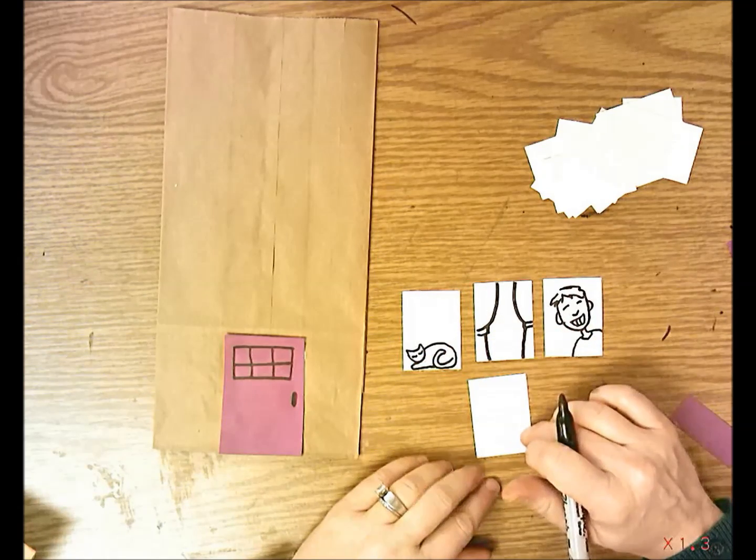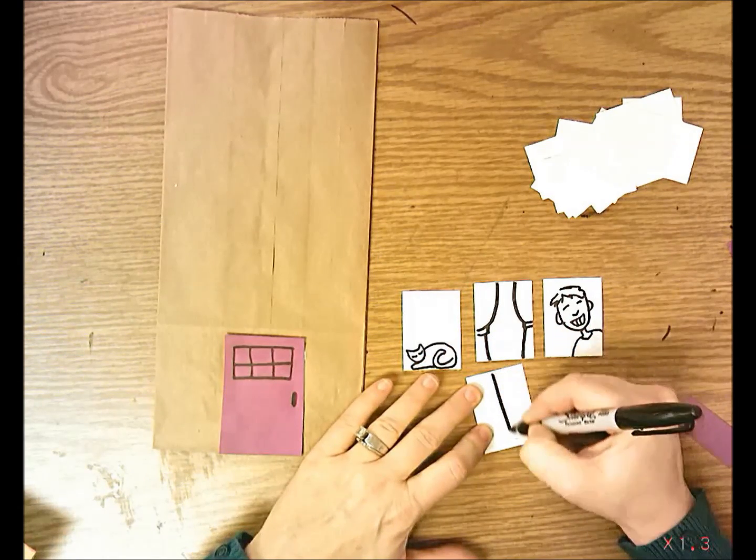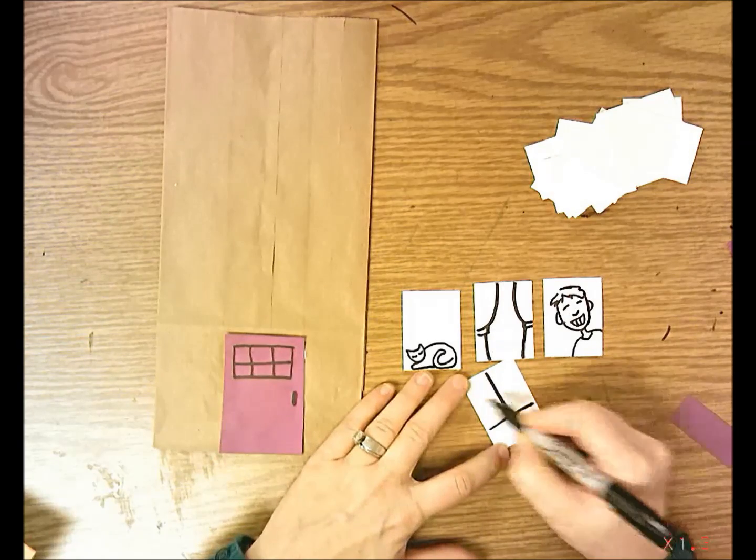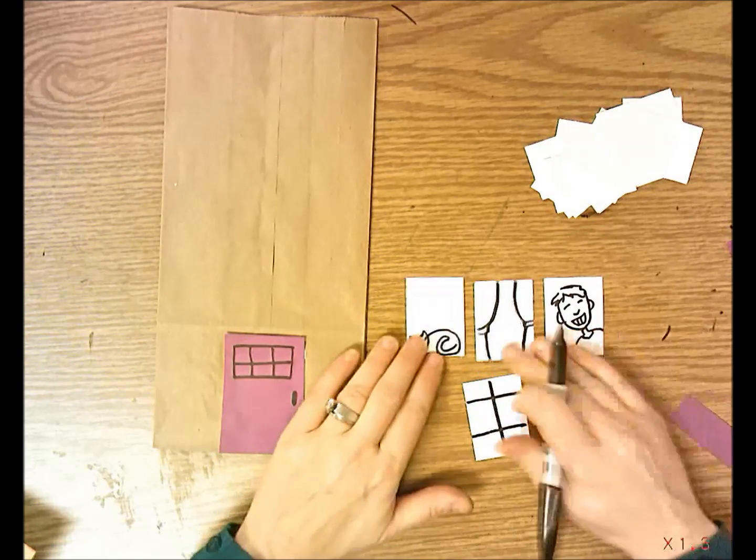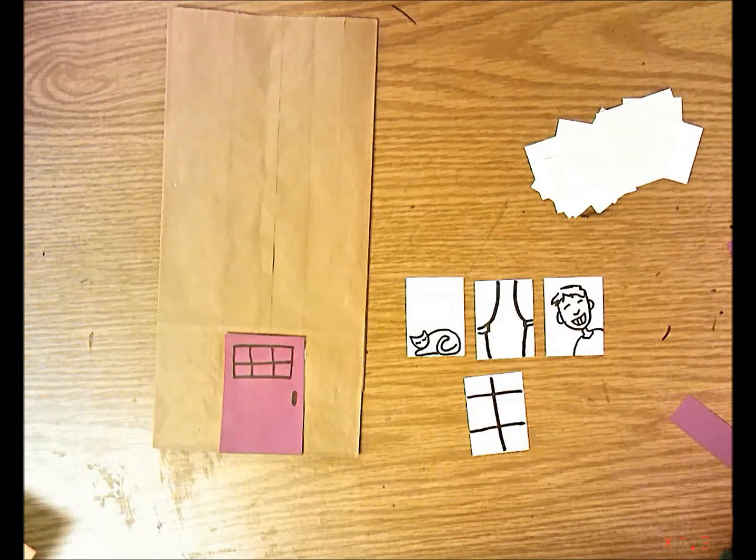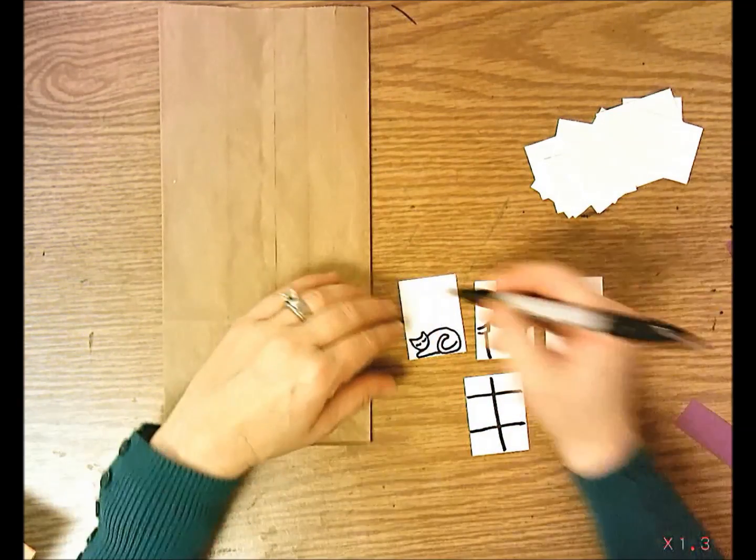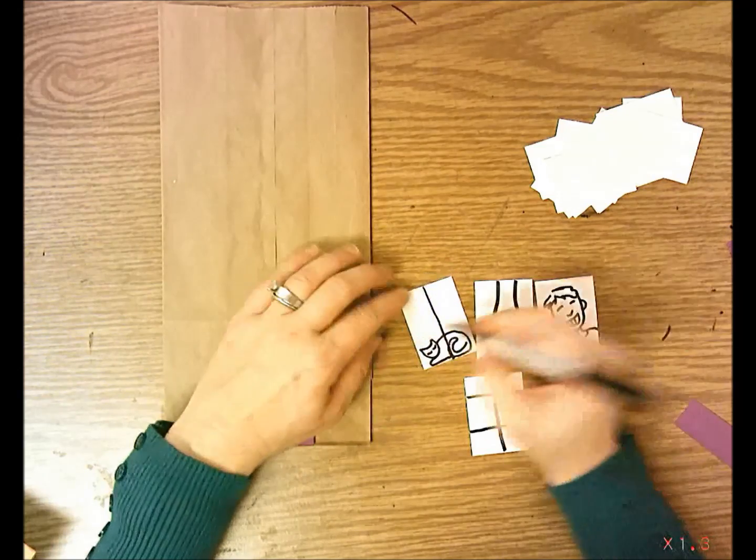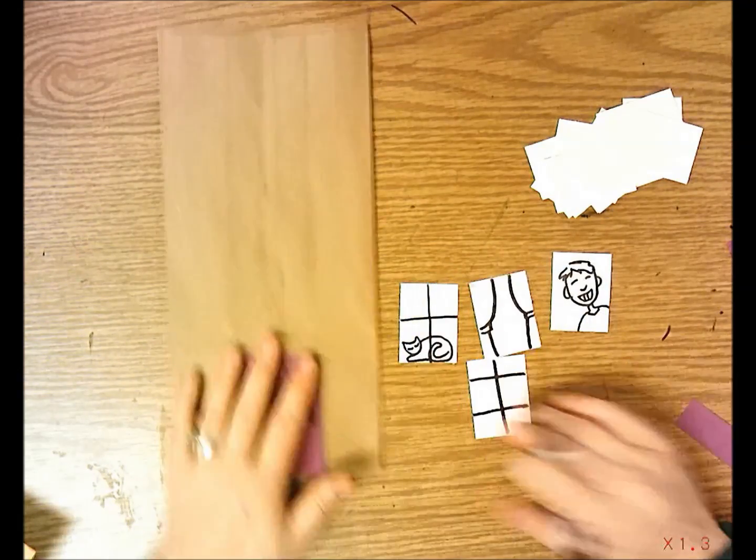But if you don't draw anything in a window, I want you to put those breaks in the window, those lines that go across so that we know it's a window. You can draw little scenes in the windows or you can do the breaks. If you draw the scene, you can also do the breaks. It's up to you.